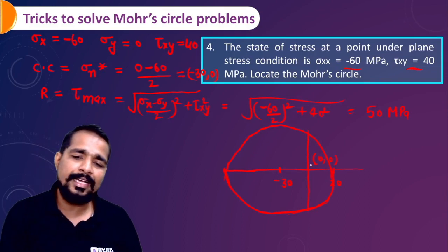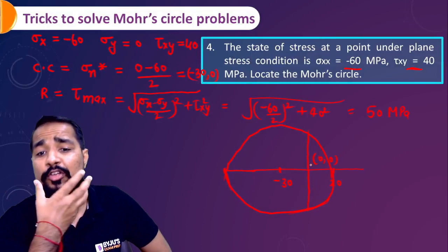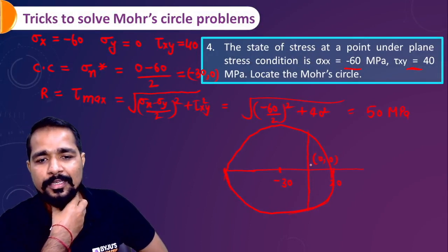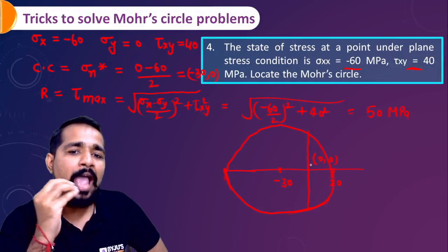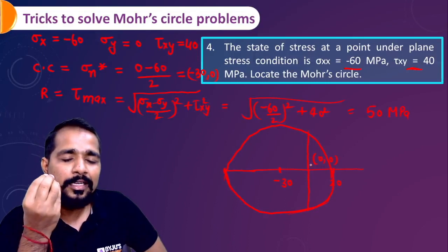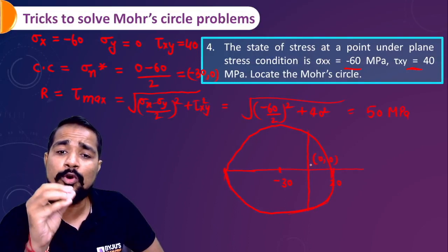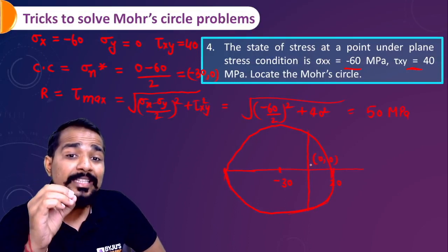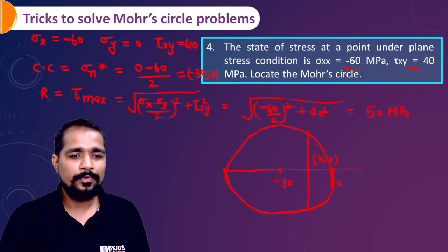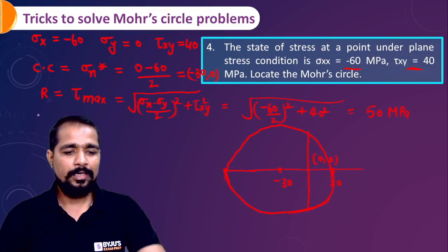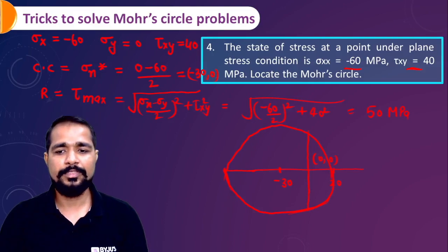By following this procedure — finding the center coordinate and radius analytically — you can save a lot of time solving Mohr's Circle problems. I hope this trick helps you solve many problems related to Mohr's Circle in minimum time. Thank you.